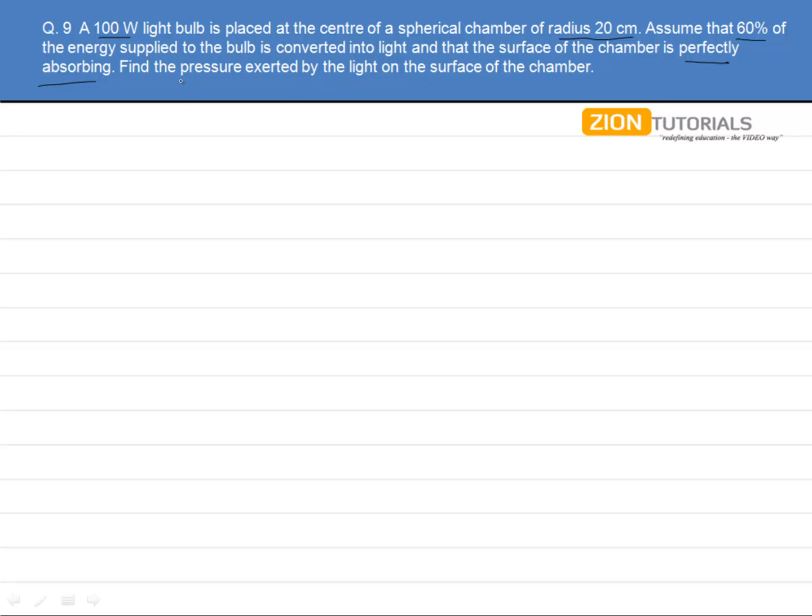We need to find the pressure on the surface of the chamber. We know that pressure equals force upon area, and we have been given the radius for the spherical chamber. So we have the area to be 4πr². Our only task remains is finding this force F.